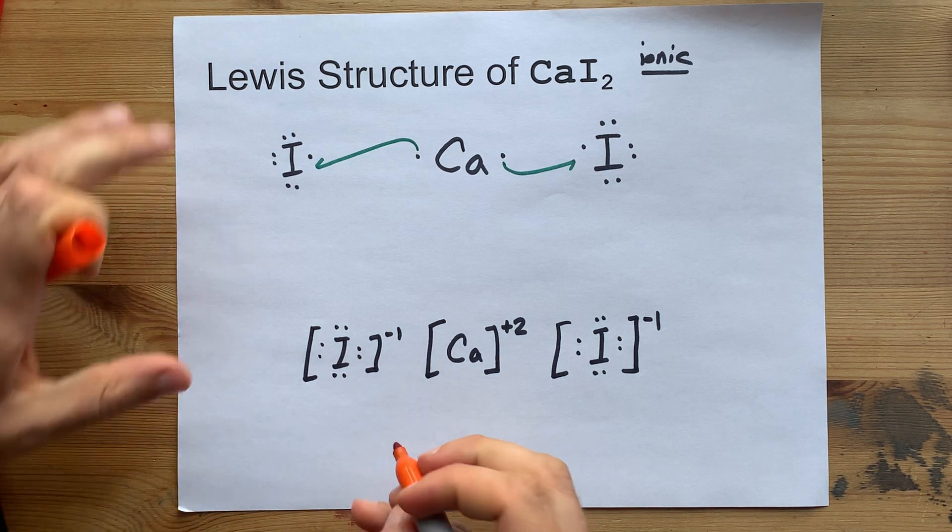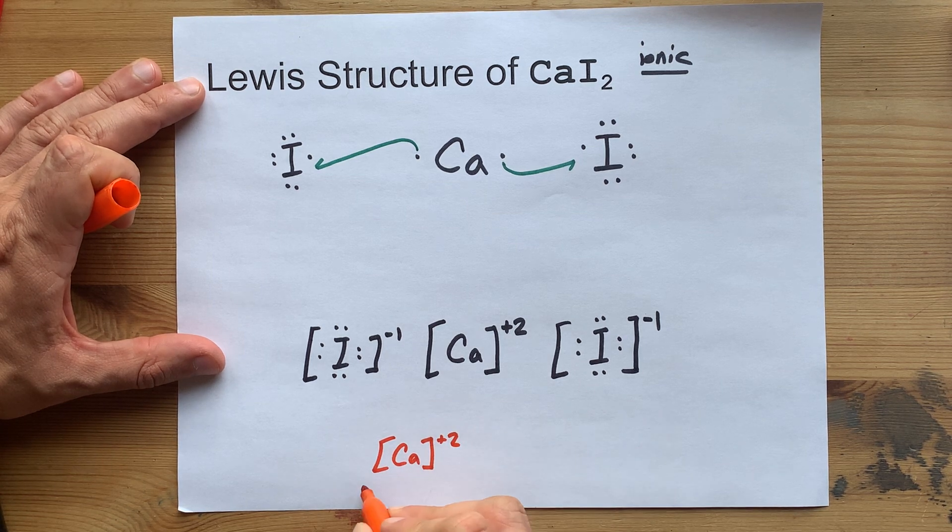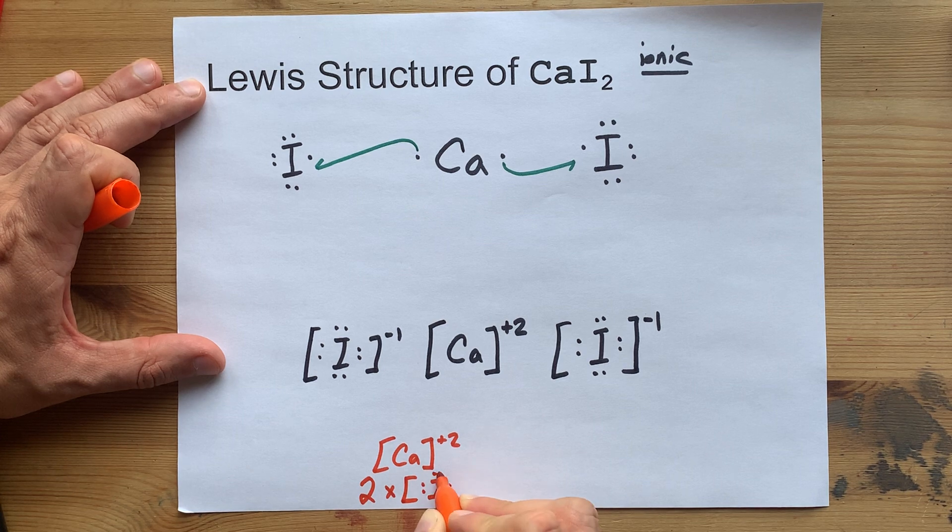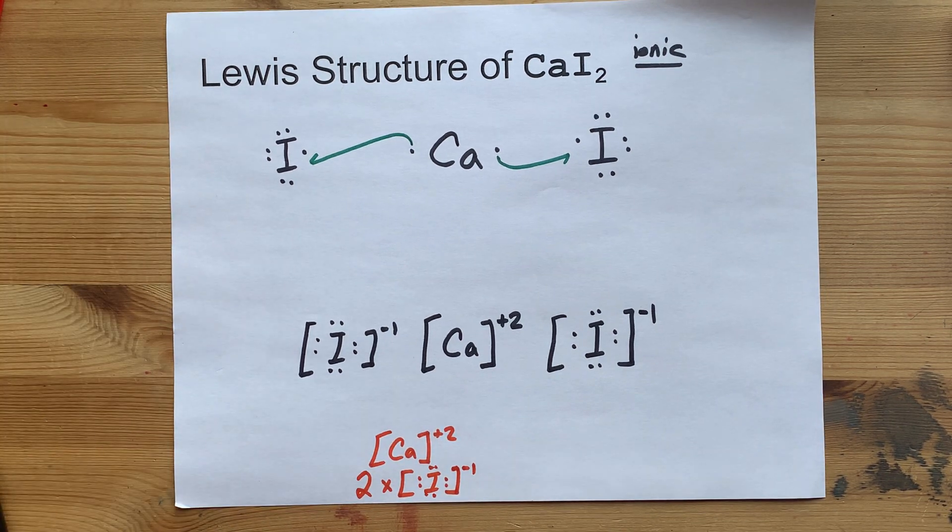Now your teacher might let you take a shortcut here. If you draw the Ca, then you might be able to do two times that iodine, just to save you from writing it out twice. Clear that with your teacher before you put it on a test though, would you?